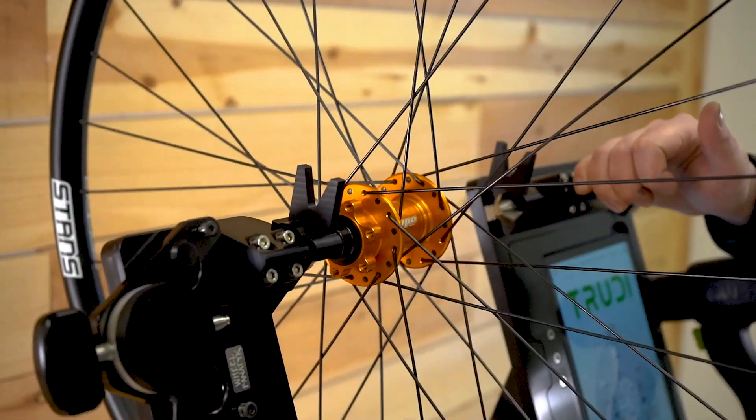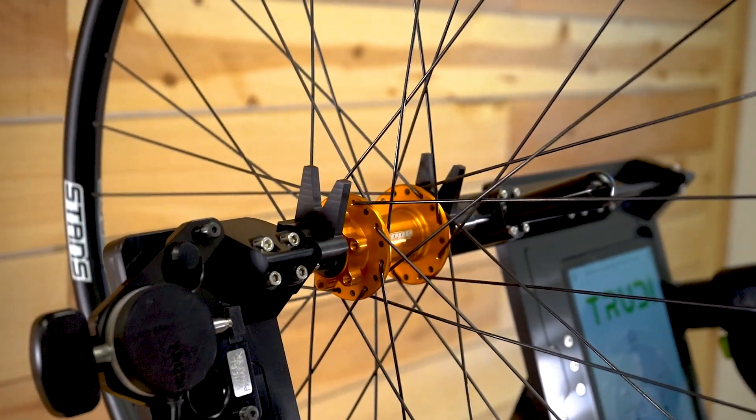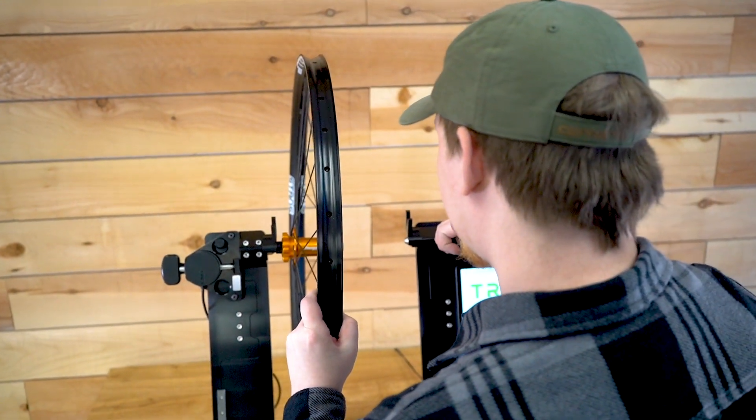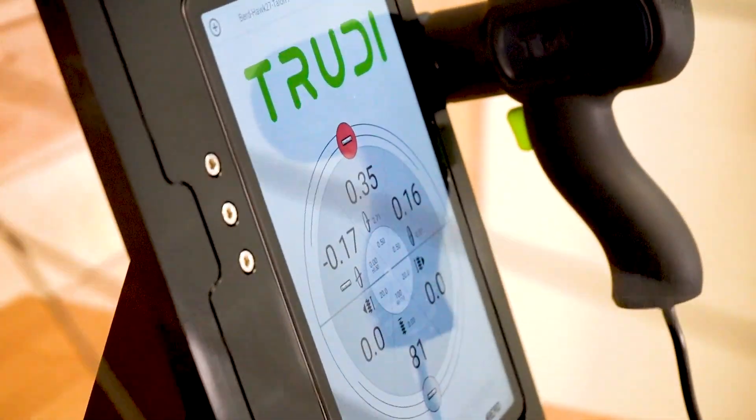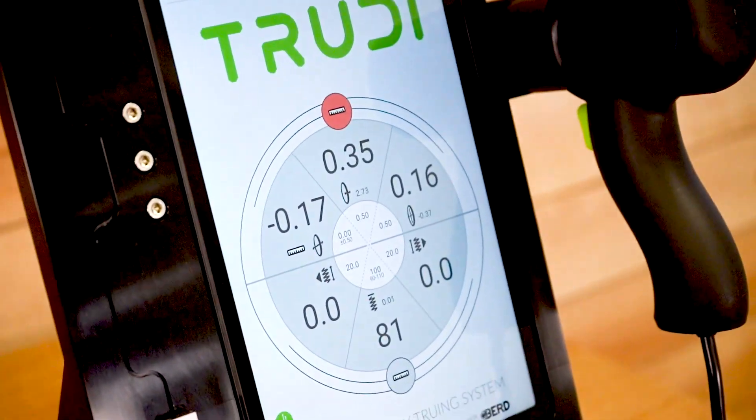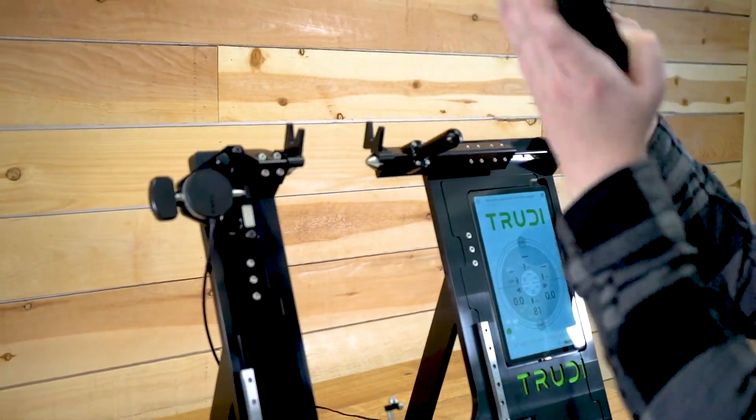Then, we open the gas spring and place the wheel in the truing stand, ensuring that the high tension side is on the left. This allows Trudy to measure lateral and radial data on that side of the rim. We then flip the wheel to measure the second side.